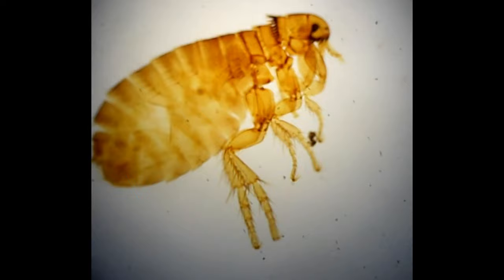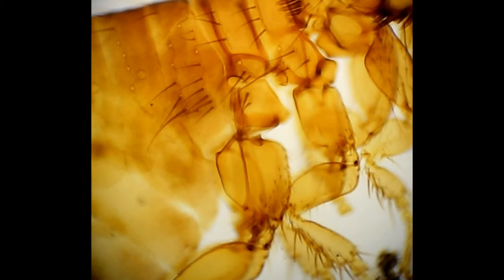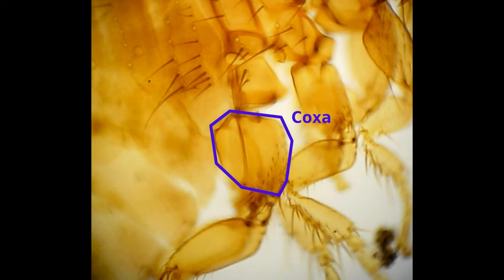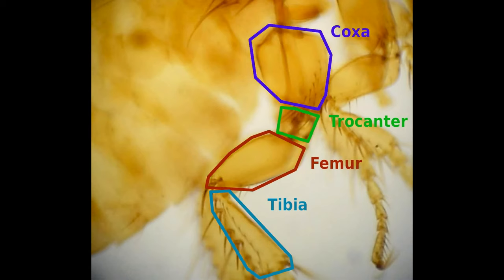The hind leg is composed of several segments. Starting with the first part attached to the metathorax, we have the coxa. This is attached to the femur by a smaller plate called the trochanter. The femur is attached to the tibia, and the tibia is attached to the tarsus composed of five segments ending in the tarsal claw.